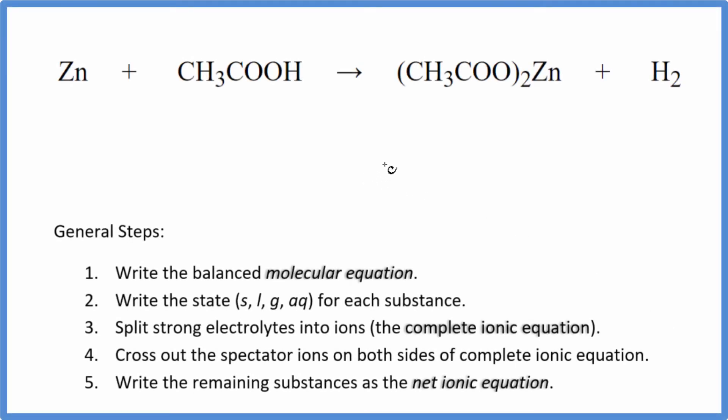In this video, we'll write the balanced net ionic equation for Zn plus CH3COOH. This is zinc, and this is acetic acid. Sometimes you'll see this written as HC2H3O2. It's the same thing, just a different way to write it.